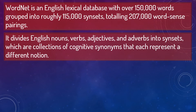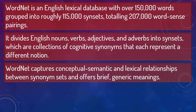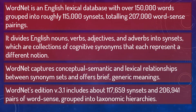It divides English nouns, verbs, adjectives, and adverbs into syn sets, which are collections of cognitive synonyms that each represent a different notion. WordNet captures conceptual semantic and lexical relationships between synonym sets and offers brief, generic meanings. WordNet's edition V3.1 includes about 117,659 syn sets and 206,941 pairs of word sense, grouped into taxonomic hierarchies.